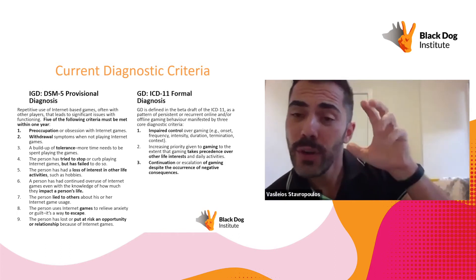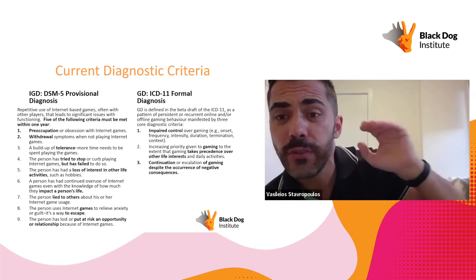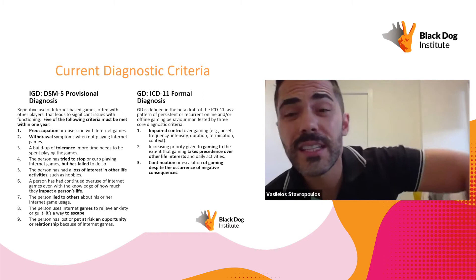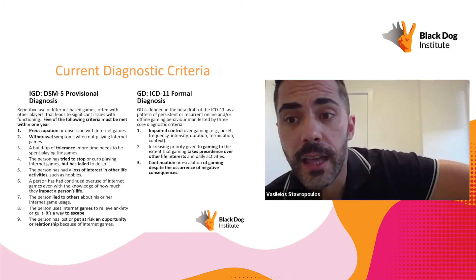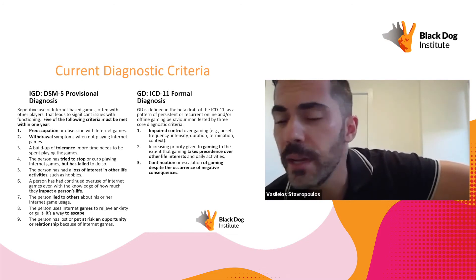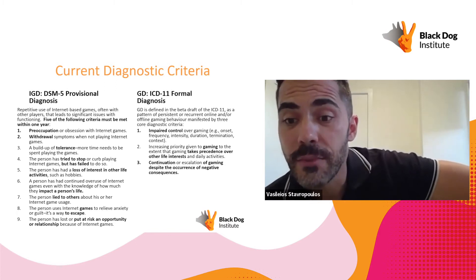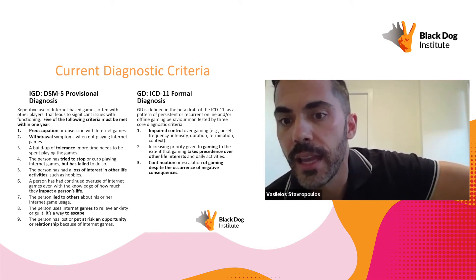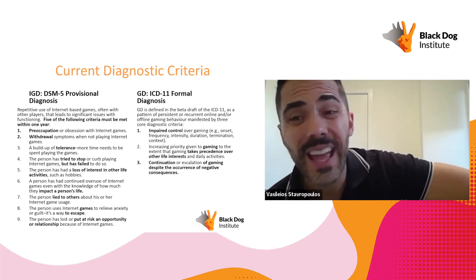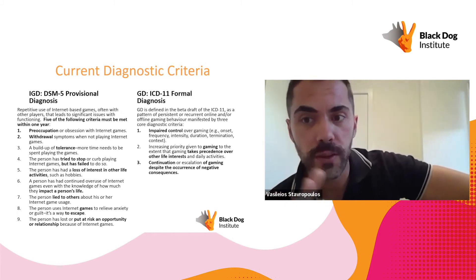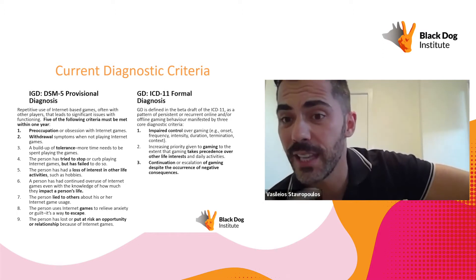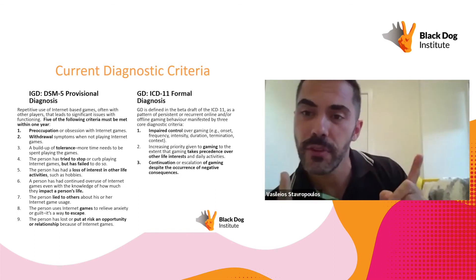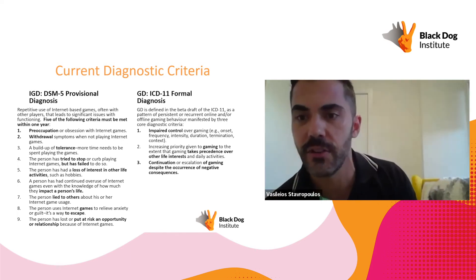If one presents with five out of these nine criteria over a period of one year, it is suggested they receive this provisional diagnosis. When it comes to ICD-11, six years later in the 2019 beta draft, the criteria were significantly simplified to just three: impaired control over gaming, gaming taking precedence over other life interests, and continuation of gaming despite negative consequences — all needing to occur for more than a year. This applies independent of whether the game is online or offline, player-versus-environment or player-versus-player.